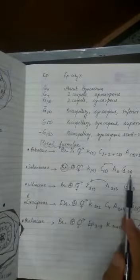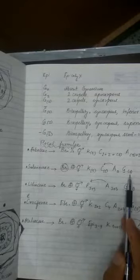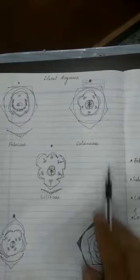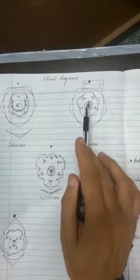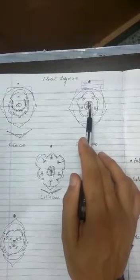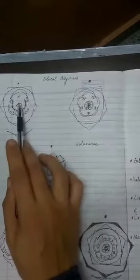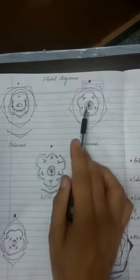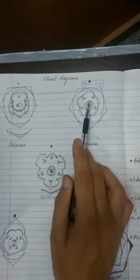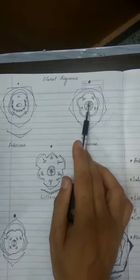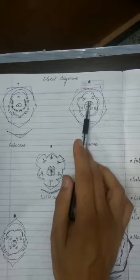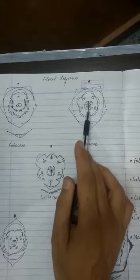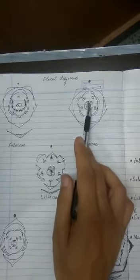The gynoecium of Solanaceae carries two carpels that are fused, giving two locules — unlike Fabaceae which has only one locule. The diagram clearly shows axile placentation, with a swollen placenta and a large number of ovules arranged around it.